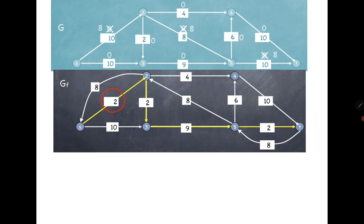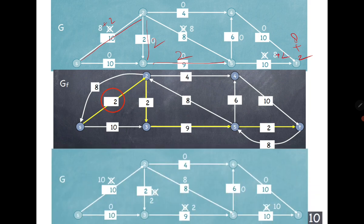Again in the residual graph we look for an augmenting path. There are many options — try to think of one that reduces the number of steps. The chosen augmenting path has minimum capacity 2, so the flow increases from 8 to 8 plus 2, which is 10. The edges along the path are updated accordingly: some become 2, others become 8 plus 2.